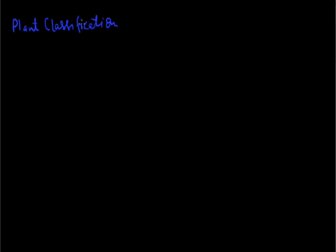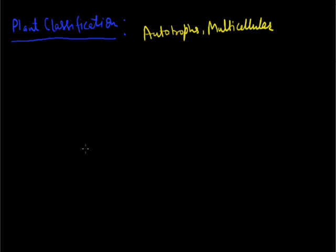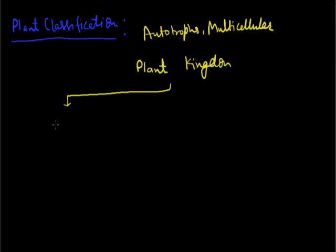Plant classification was given by Whittaker. Plants are multicellular living beings; they are autotrophs in nature. According to this classification, the plant kingdom is divided into two sub-kingdoms: the first is called Cryptogamae and the second sub-kingdom is called Phanerogamae.